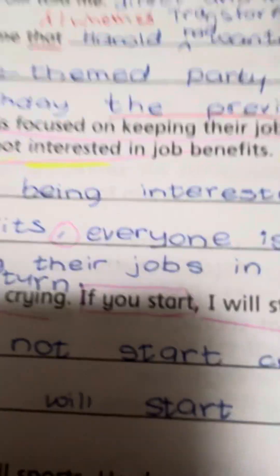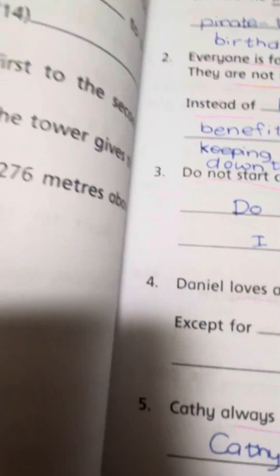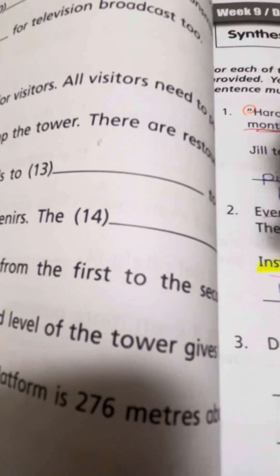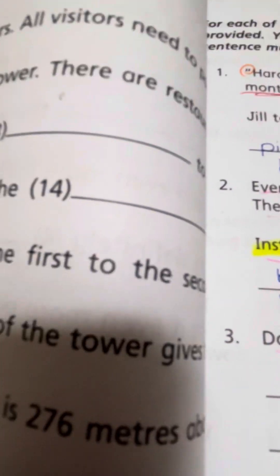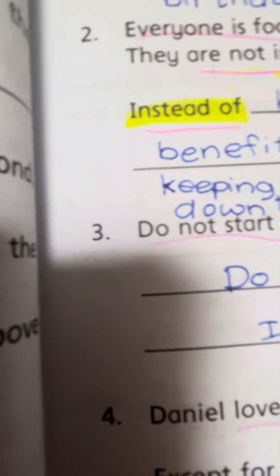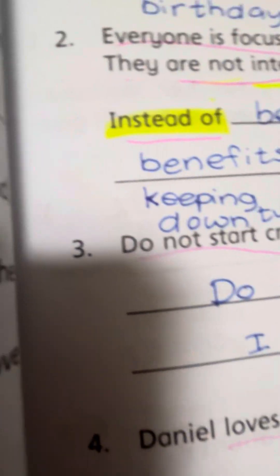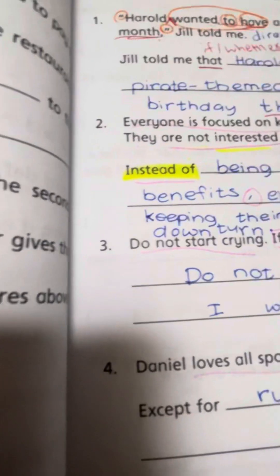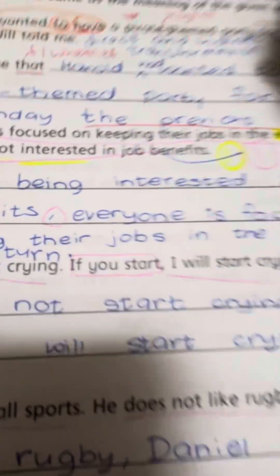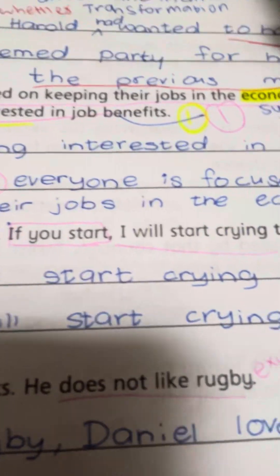Everyone is focused on keeping their jobs in an economic downturn. They are not interested in job benefits. The connector we are using is 'instead of' — a preposition. This is synthesis. Being interested in job benefits is action one, and economic downturn is action two.